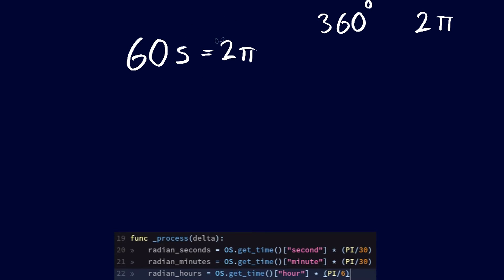However, what I want to know is the magic number I would have to multiply each second with to get the current angle. And that is done by simply dividing both sides by 60. Because my goal is to find out what 1 second is in radian, which is on the right side here. Now 60 divided by 60 is just 1. That leaves us with 1 second is equal to 2 pi divided by 60.